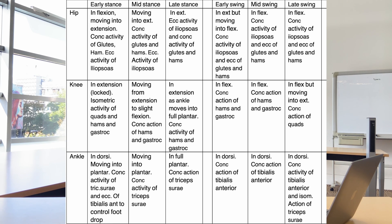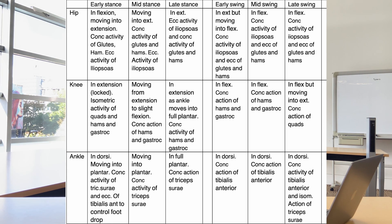One common tutoring confusion is how the hamstrings can be concentrically contracting from mid-stance into late stance even though the knee is going from flexion to extension. To understand why: visualize a runner not pushing off the ground but grabbing and pulling the ground towards them — that's the hamstring's action. Also remember the hamstring connects to the hip, so its concentric action simultaneously extends the hip as well as flexing the knee joint.